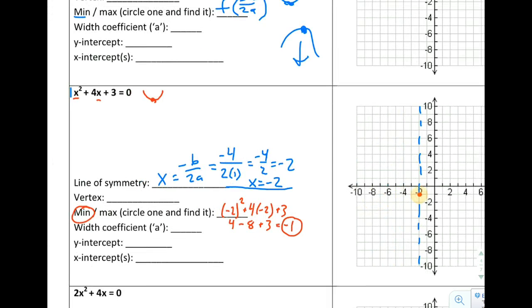So my vertex is going to be negative 2, negative 1. So by finding the axis of symmetry and then plugging that x value back into the equation to get a y value, we're going to be able to get our vertex.